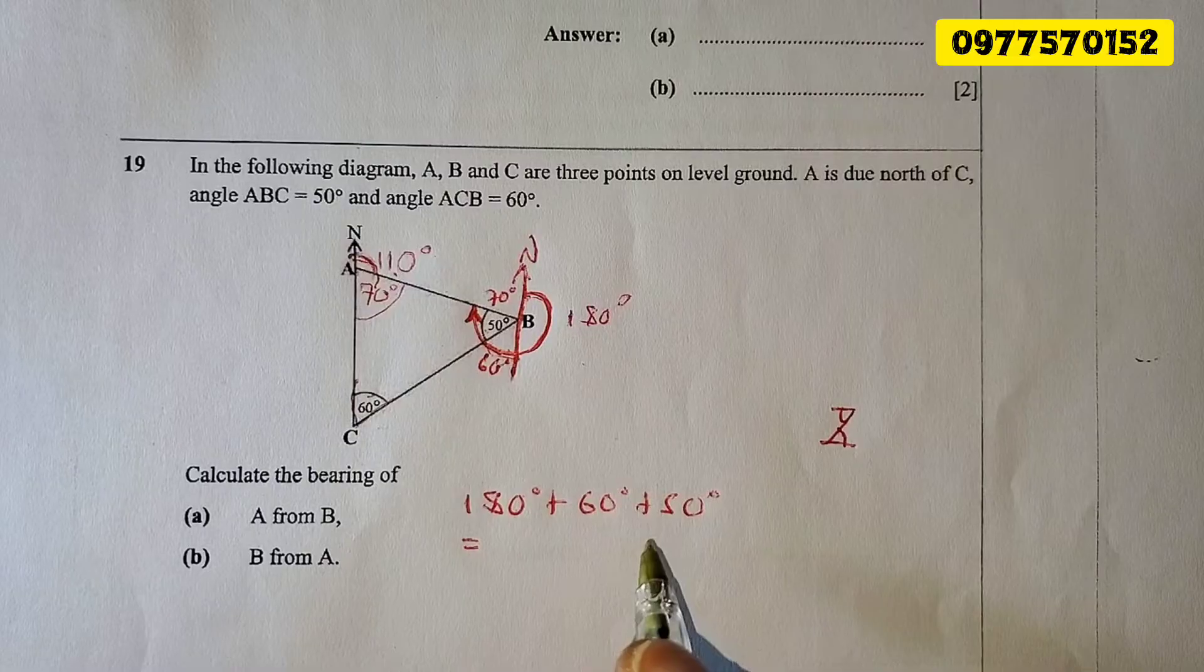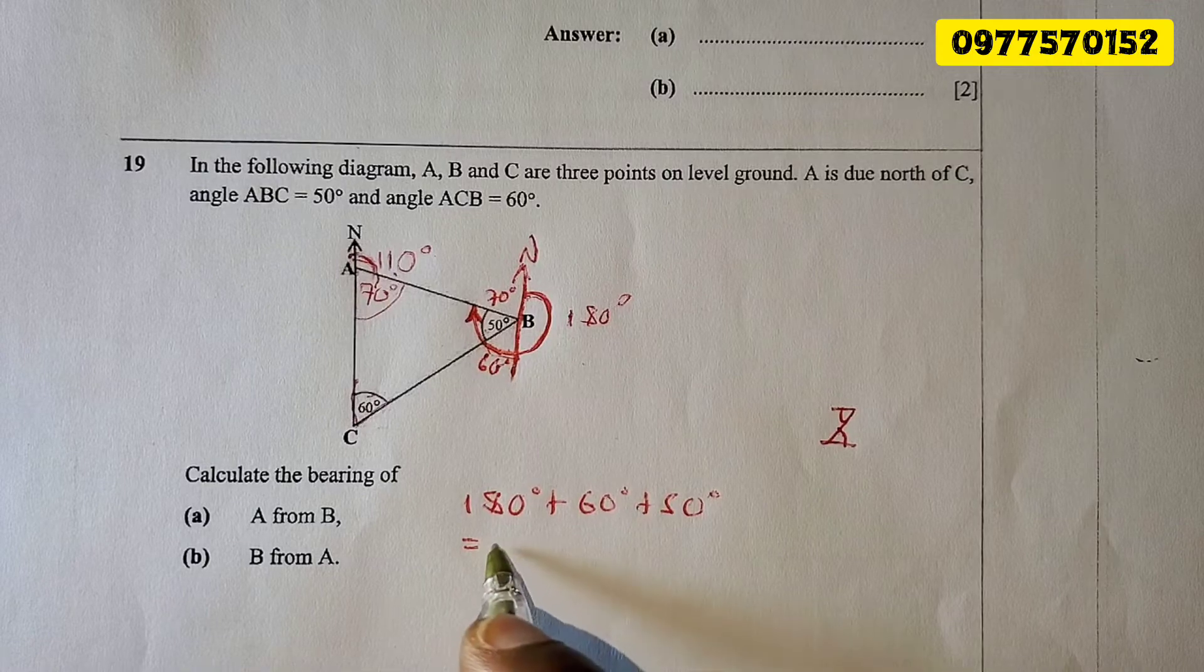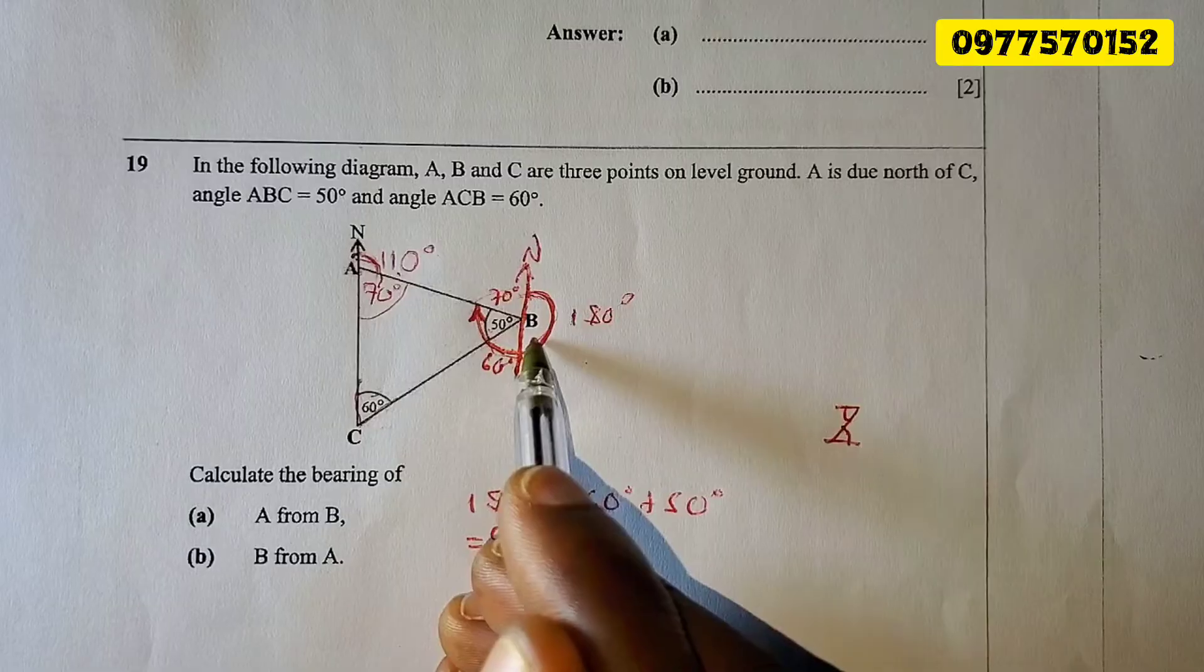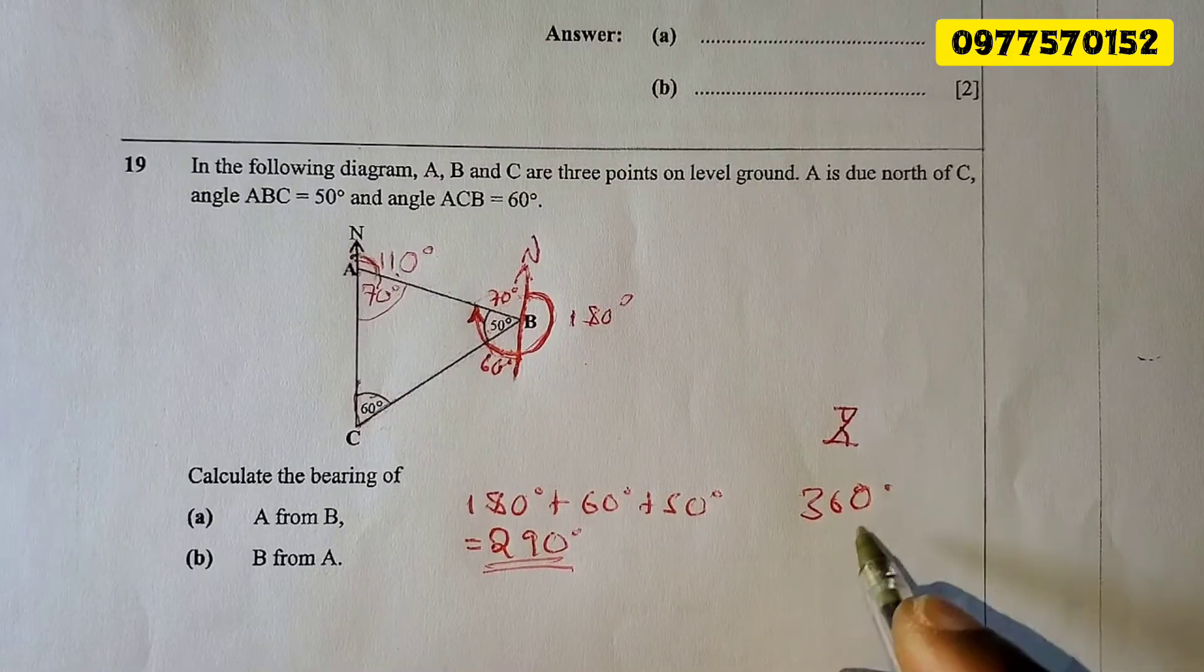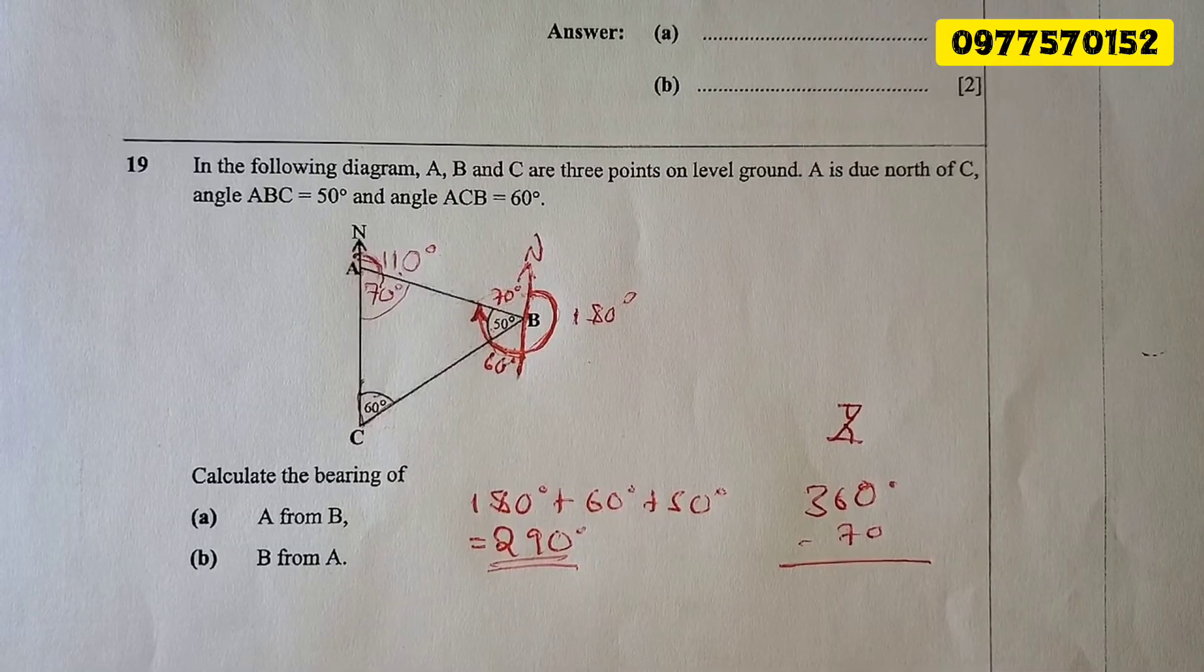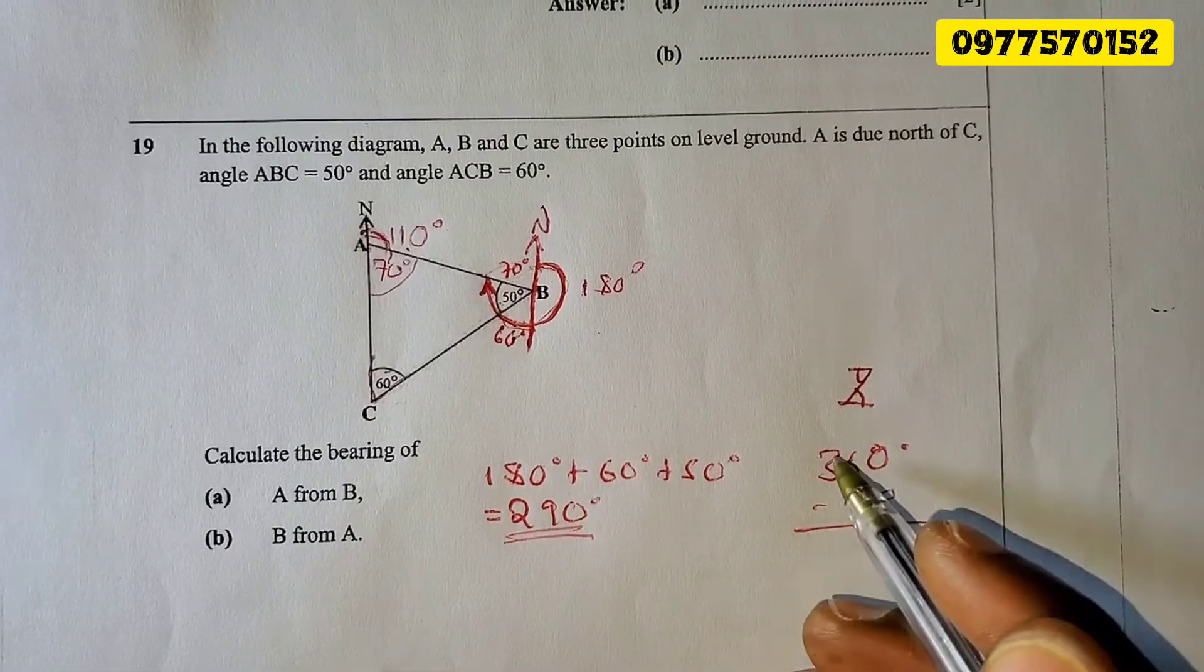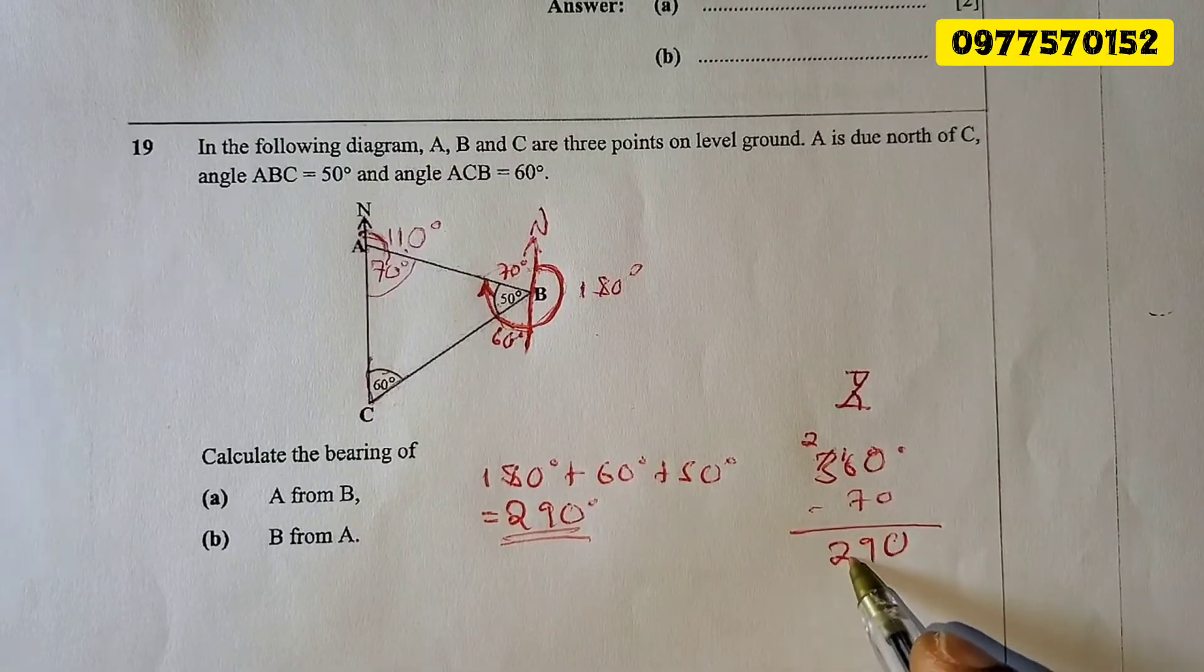290 degrees. Let's check if it is 290 degrees if we do other calculations. You know that a complete turn is 360, and we know that here is 70. Let's just subtract this from 360. So 360 degrees minus 70. Always follow the shortest calculations because in an exam you'll be wasting time. 0 minus 0 is 0, 6 minus 7—this becomes 2, this becomes 16. 16 minus 7 is 9, 2 minus 0 is 2. 290, same. Very good.